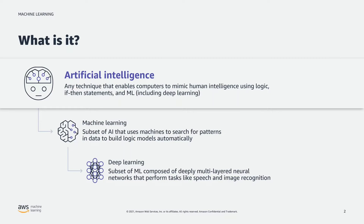As a subset of artificial intelligence, we see machine learning — the process machines use to interrogate data, learn patterns from that data, and then automatically build models which you can use to predict outcomes based on historical patterns. Deep learning is a subset of that again, focused around multi-layer neural networks, typically used for complex techniques like speech and image recognition.